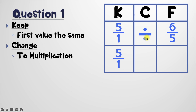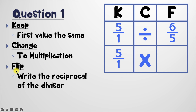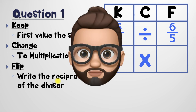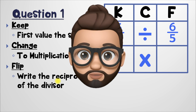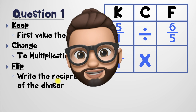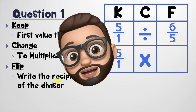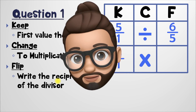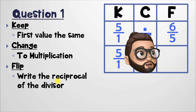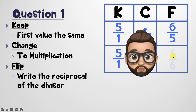And what we're changing is the division operation into multiplication. So here, underneath the division sign, I'm going to write the multiplication sign, because that's what we're changing it to. And last, we've got the letter F, which stands for flip. And all we're flipping is a fraction into the reciprocal. Don't get freaked out by the word reciprocal — all it is, is a fancy math word meaning to take your fraction and flip it around. So the top becomes the bottom and the bottom becomes the top. So here, our six over five will become five over six.